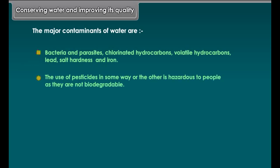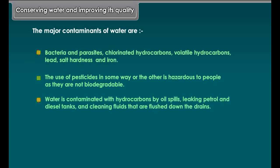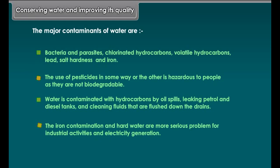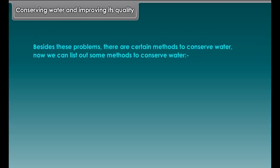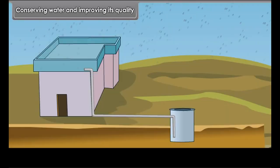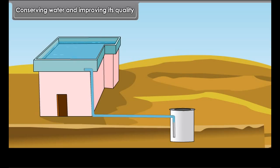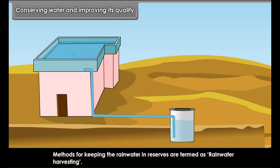Conserving water and improving its quality. The major contaminants of water are bacteria and parasites, chlorinated hydrocarbons, volatile hydrocarbons, lead, salt hardness and iron. The use of pesticides is hazardous as they are not biodegradable. Water is contaminated with hydrocarbons by oil spills, leaking petrol and diesel tanks and cleaning fluids flushed down the drains. Iron contamination and hard water are more serious problems for industrial activities and electricity generation.